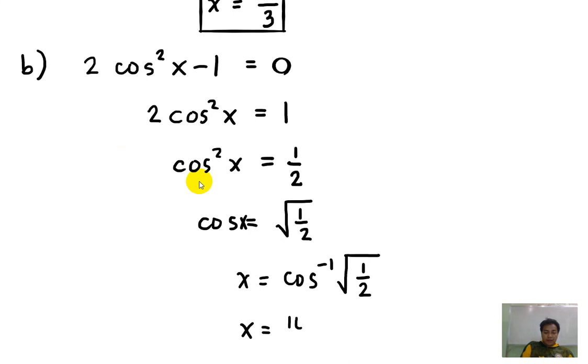So pi over 4. So for letter B, our answer is x is equal to pi over 4. So pi over 4 is between 0 and pi over 2 as well. So that's our answer.